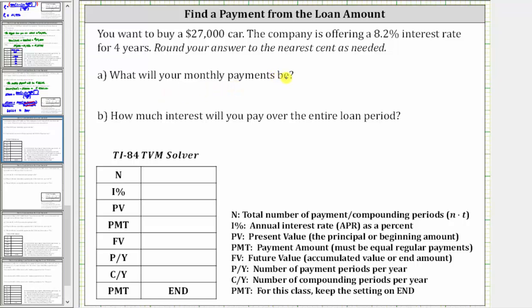To determine the monthly payments, we will use the TI-84 TVM solver. Let's begin by determining the information we need. Capital N is the total number of payment periods. Because you are paying monthly for four years, N is the number of months in four years — four times 12 — which is 48. I% is the annual interest rate as a percent, and therefore I% is 8.2.